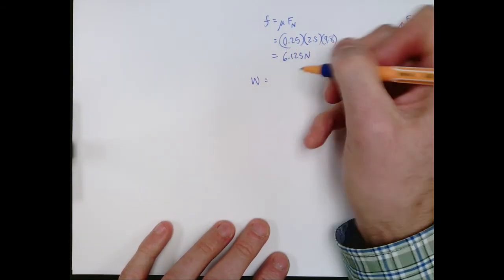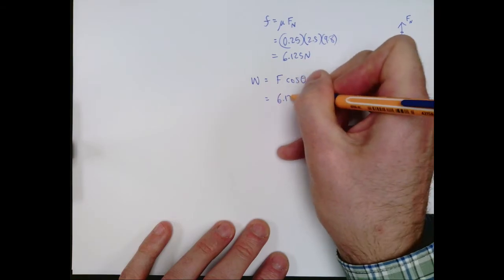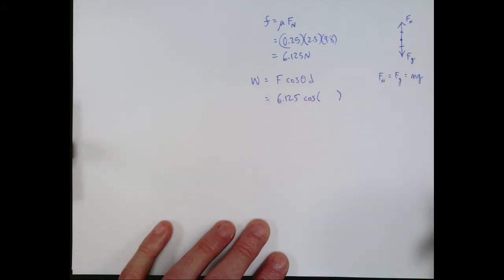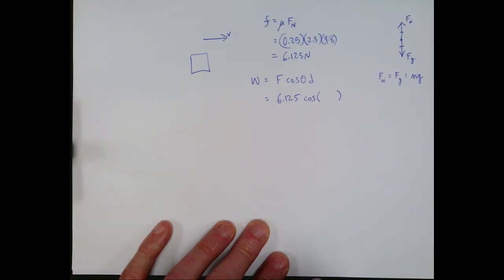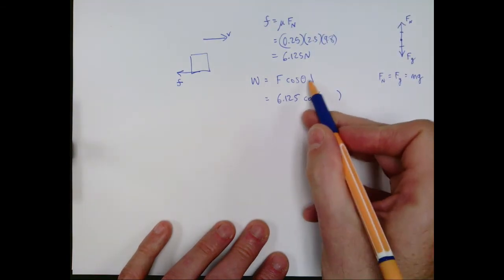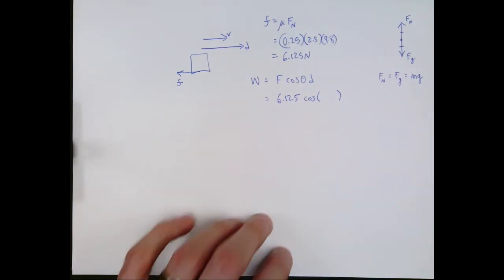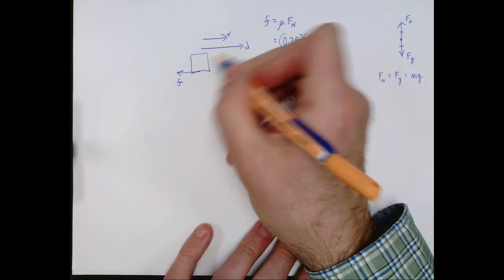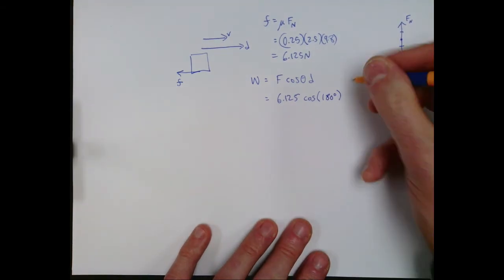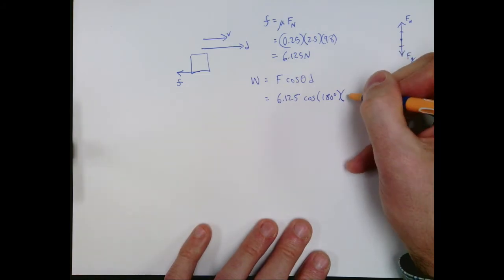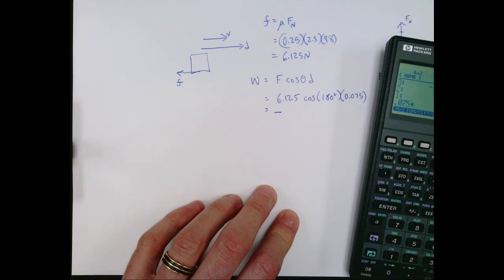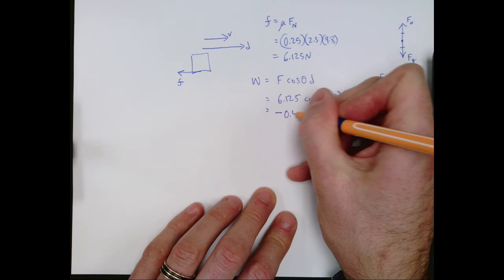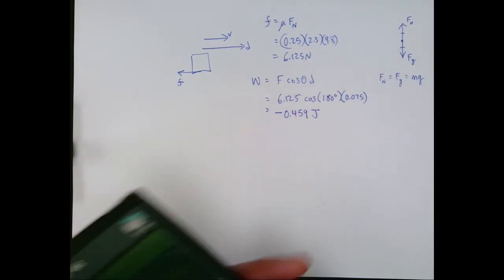So now we can go back and calculate the work done by friction. Force, cosine theta, distance. So the force is 6.125. Cosine theta, sometimes people get messed up by figuring out what that angle is. It's the angle between the direction of the force, and which way is friction pointing in this case. The block is actually moving that way. Friction always points in the opposite direction of motion, or the way something's about to slip. So friction points that way. And it's the angle between force and displacement, and the object is displacing that way. The direction of displacement is always going to be in the same direction as the velocity. So those two arrows point 180 degrees in the opposite direction of one another. And then we have the distance, which is 0.075 in meters. So I'm going to get a negative answer here. 6.125 times 0.075 is 0.459. I'm going to round it off there. 0.459, and that would be joules.